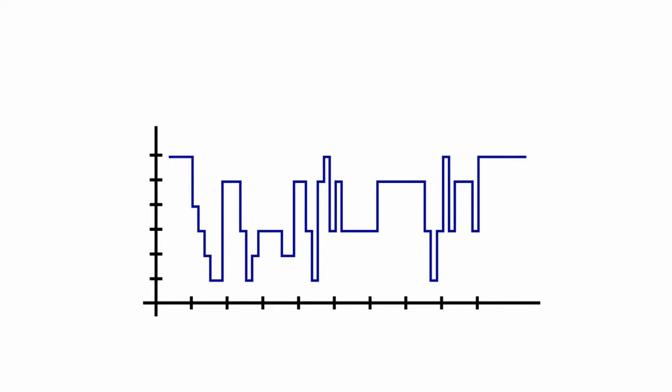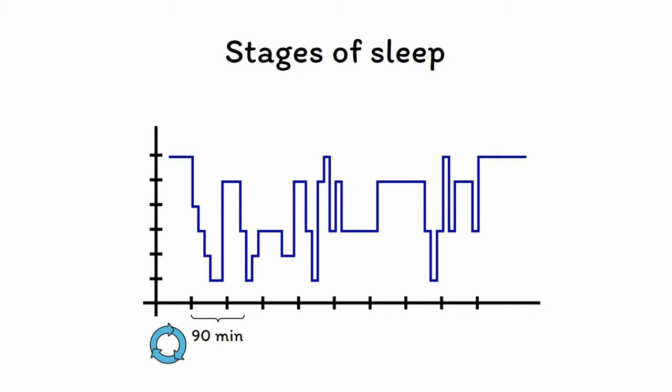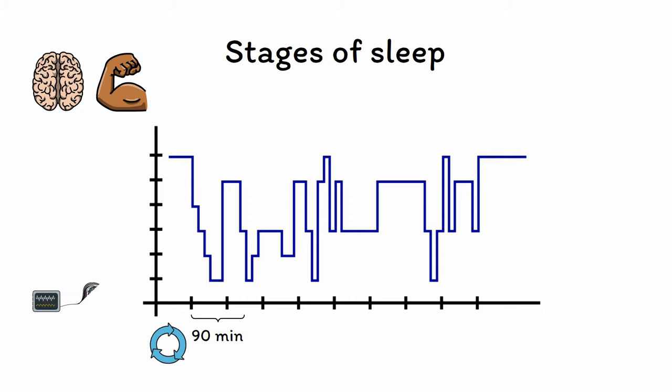Sleep itself is a dynamic process that ebbs and flows throughout the night, even if we are not necessarily conscious of this. Sleep generally occurs in sleep cycles that last 90 minutes on average, with most people having 4-6 sleep cycles per night. Sleep cycles involve a regular progression through various stages of sleep, as seen in this figure, with hours of sleep on the x-axis and stage of sleep on the y-axis. Each stage of sleep is characterized not only by changes in consciousness and behavior, but also by a specific pattern of electrical activity in the brain, which can be seen using an electroencephalogram, or EEG.